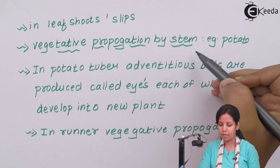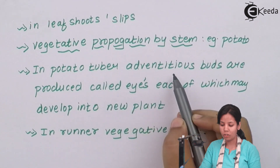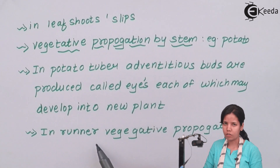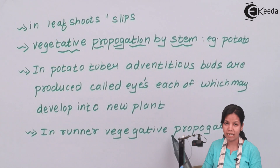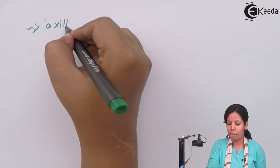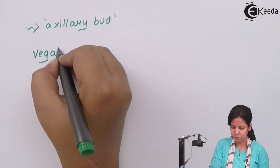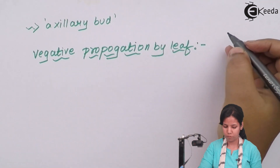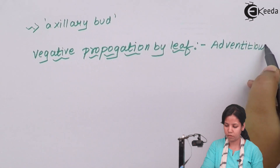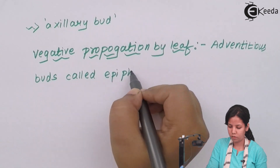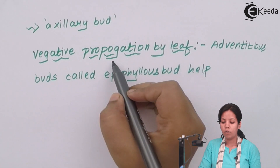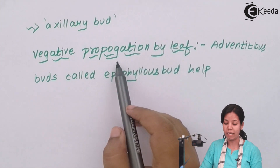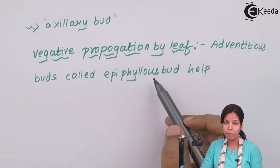Vegetative propagation by stem — an example is potato. In potato, the adventitious parts, basically the eyes of the potato, can develop into a new plant. In runners or stolons such as grasses, axillary buds help in vegetative propagation. Vegetative propagation in leaves of bryophyllum takes place with the help of adventitious parts called epiphyllous buds, which help in vegetative propagation.